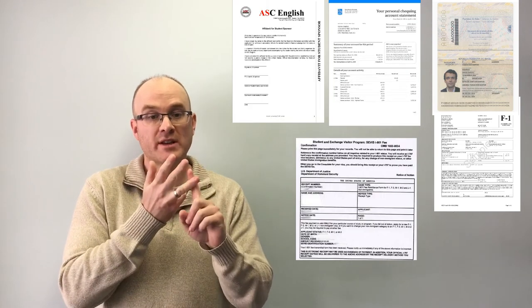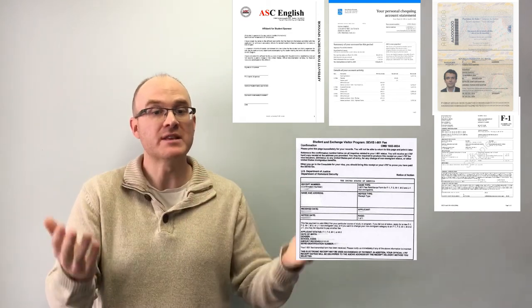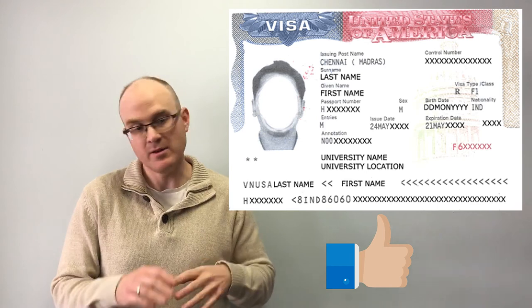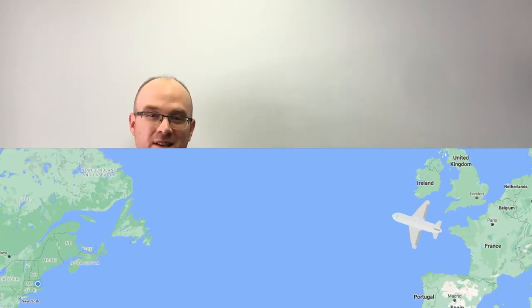Then you'll go to your visa interview. In the visa interview, you'll want to bring your passport, obviously, your I-20. You'll want to bring your bank statement and your affidavit of support. You'll want to bring your photos with you. You'll have the visa interview. If it's approved, then you book some flights and you come to ASC in the United States. And at that point, you will pay for the rest of your course.